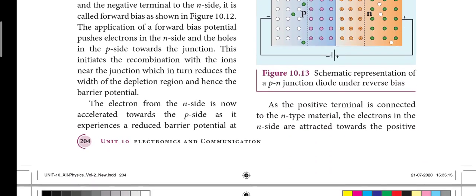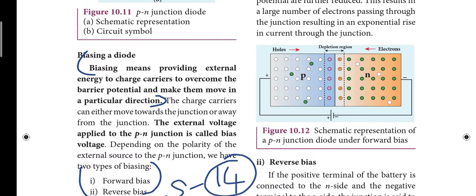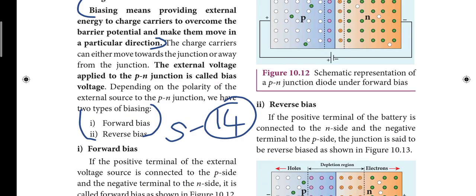Next, page number 204. The first biasing in the diode, four lines are in black letters. That definition is written. There are two types: forward bias and reverse bias. This is the 14th short answer.